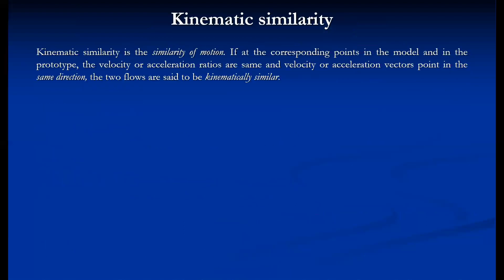As far as kinematic similarity is concerned, it is the similarity of motion. If at the corresponding points in the model and in the prototype, the velocity or acceleration ratios are the same, and the velocity or acceleration vectors point in the same direction, then the two flows are said to be kinematically similar — that is, flow over the model and flow over the prototype. For kinematic similarity, their velocity ratios and acceleration ratios must be the same.